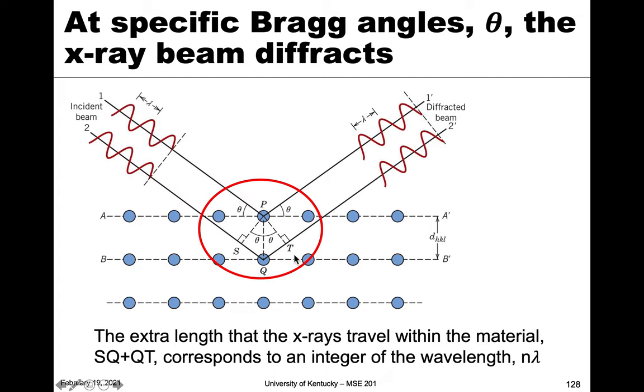What we look at in this case is the geometry. The first beam goes to point P and rebounds. If beam two travels the same distance, it puts it at the surface, but then it travels an extra amount inside the material. That extra amount is the distance S to Q and then back to T. That's the extra distance compared to beam one in how much it travels.